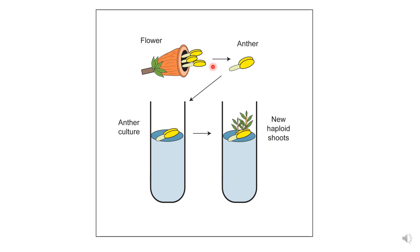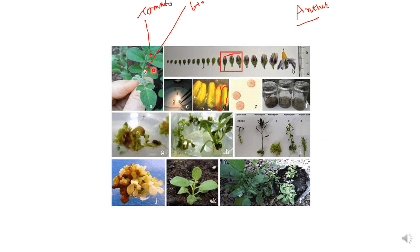This is a pictorial description of the anther culture technique where you can see that from a flower, anthers are taken and cultured on a suitable artificial medium, and the anthers develop into new haploid shoots. The microspores present in the anthers, because they have only one set of chromosomes, develop into haploid shoots. For example, from a tomato plant, flowers of different sizes are taken and the anthers are isolated from the flowers in a tissue culture lab under laminar flow. These yellow-colored anthers are isolated and the microspores present in them are visible.